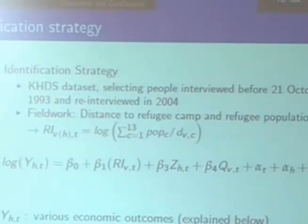Thanks to our fieldwork, we are able to compute the distance between each village and each refugee camp. The identification strategy is very simple: we look at several dependent variables and assess the impact of refugee presence on household-level economic outcomes, controlling for household characteristics, village characteristics, and household and village fixed effects. We measure exposure to refugee presence by taking the sum of the refugee population weighted by the distance between the village and each refugee camp. We compare changes in economic outcomes for households living very close to refugee camps — our treatment group — versus those living far away — our control group.